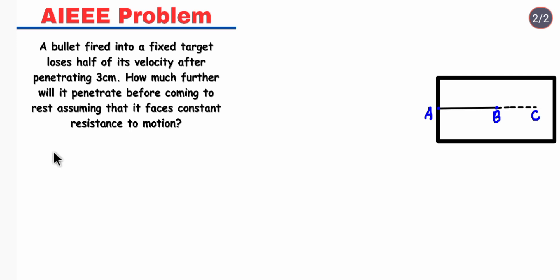First, let's consider the portion A to B. Let the initial velocity be U. Then the final velocity will be V equals U by 2, where the bullet loses half of its velocity, and the penetrating distance is 3 cm, the distance from A to B.